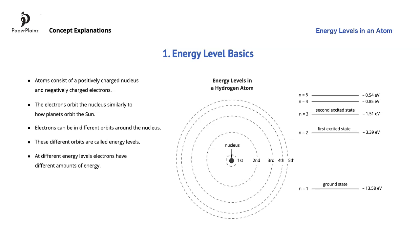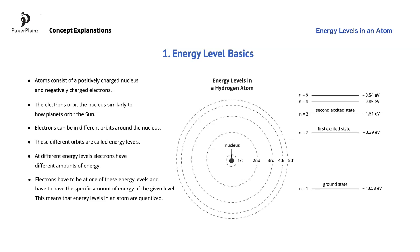A key point here is that electrons have to be at one of these energy levels and have to have the specific amount of energy of the given level. For example, an electron in a hydrogen atom can only take on one of the 5 energy values shown on the diagram. It cannot take on an energy value between these 5 energy levels — you won't find an electron in a hydrogen atom with an energy value of, for example, negative 9.8 electron volts or negative 2.3 electron volts. Therefore, we say that energy levels in an atom are quantized.